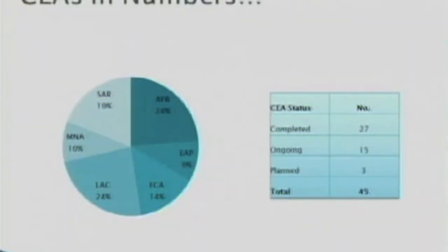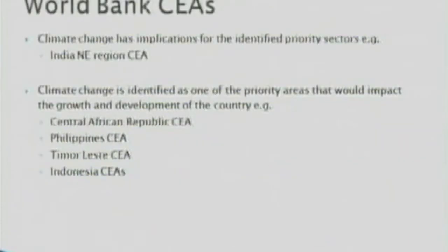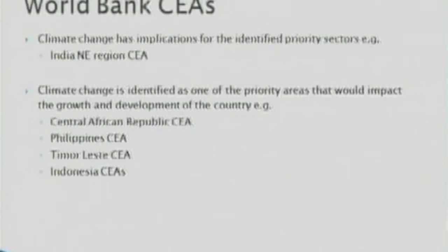To date there are 45 CEAs that have been either completed, ongoing, or planned, and about half are within the Africa and Latin America and Caribbean regions. The World Bank CEAs have addressed climate change from two different approaches. One is where climate change has implications for identified priority sectors — an example is the India North East region CEA, which looked at climate change through priority sectors of water resources and forestry. The other is where climate change is identified as a priority in itself and impacts the growth and development of the country.